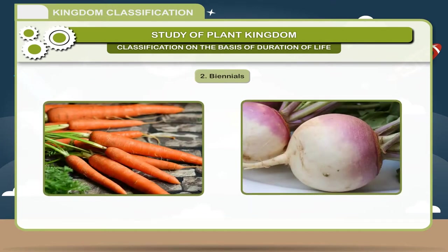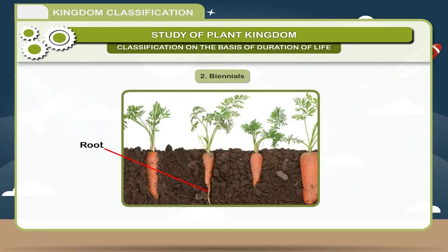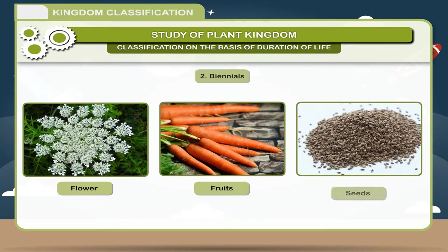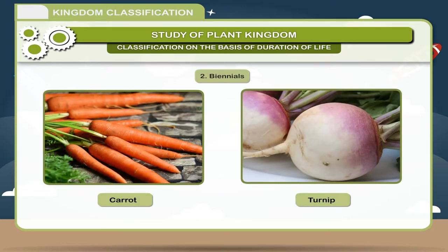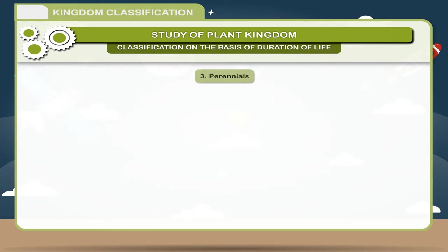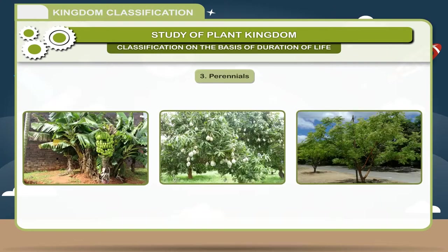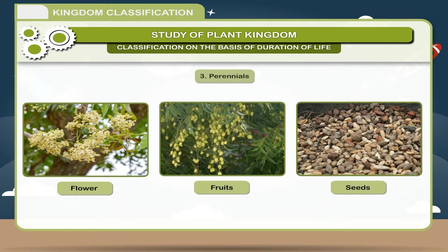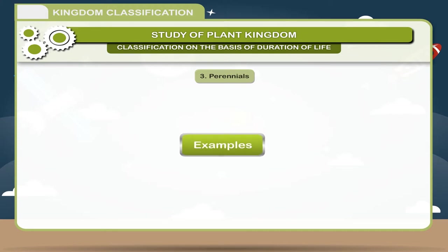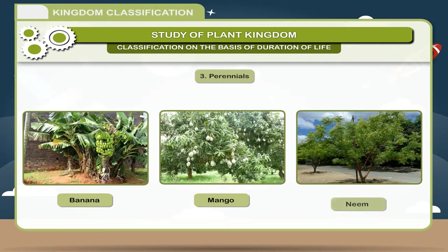2. Biennials — they live for two years or two seasons. In the first year, they produce vegetative organs: root, stem and leaves. In the second year, they produce flowers, fruits and seeds. Examples include Carrot and Turnip. 3. Perennials — these plants live for more than two years and take several years for the production of flowers, fruits and seeds. Examples include Banana, Mango, and Neem.